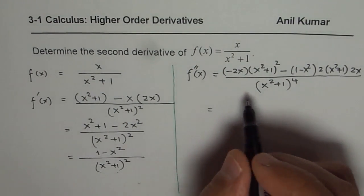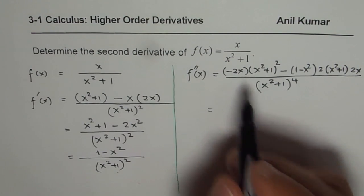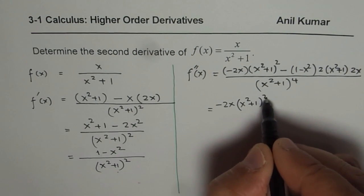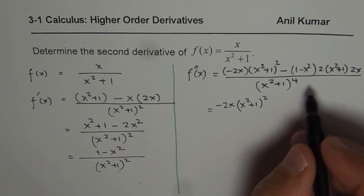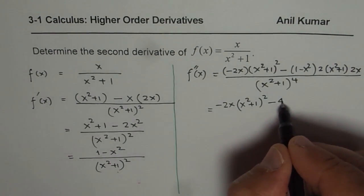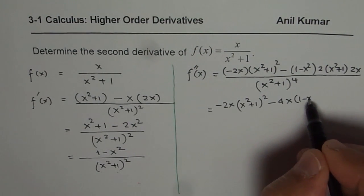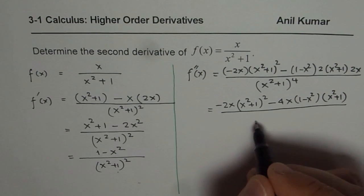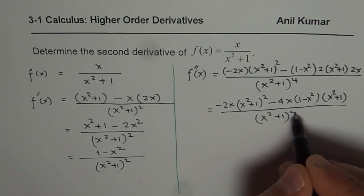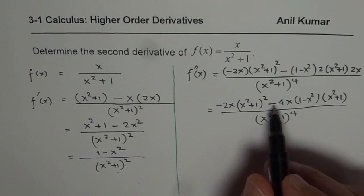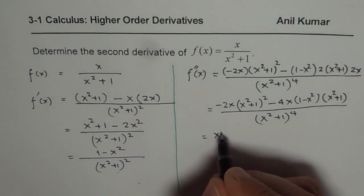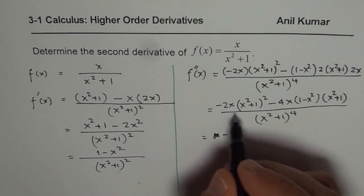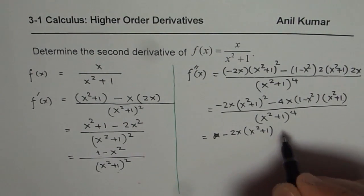Now we can simplify and rewrite the expression. We have minus 2x times (x squared plus 1) squared, and here we multiply 2 and 2 to get 4, giving us minus 4x times (1 minus x squared) times (x squared plus 1), all over (x squared plus 1) to the power of 4. We can take (x squared plus 1) as a common factor, so let us take minus 2x times (x squared plus 1) as the common factor.